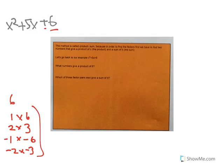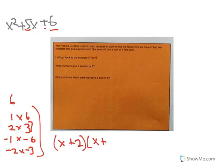Now I'm going to figure out which pair, when added together, gives me this middle number — 5. The only possible choice is 2 and 3, so it ends up being x plus 2 and x plus 3. That works because 2 plus 3 equals 5, and also 2 times 3 equals 6.